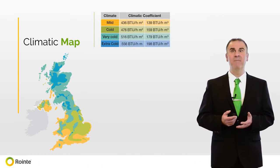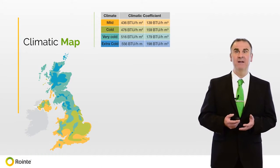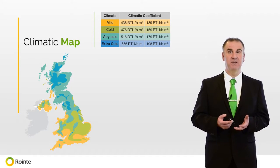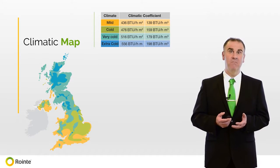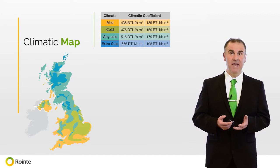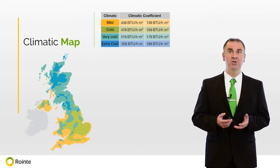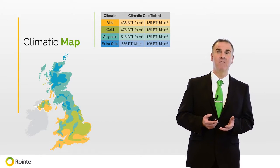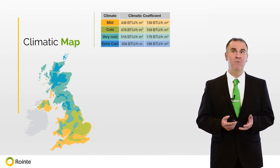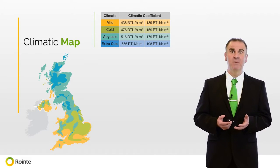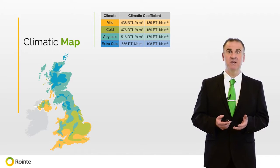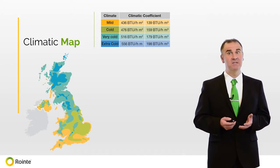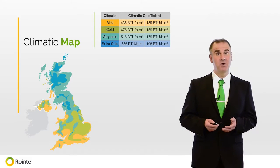The climatic map of the UK divides the UK into different heating zones, from mild to extra cold. Each zone has a climatic coefficient based on the UK weather map, and we must also consider whether we measure a room in metres squared or metres cubed.